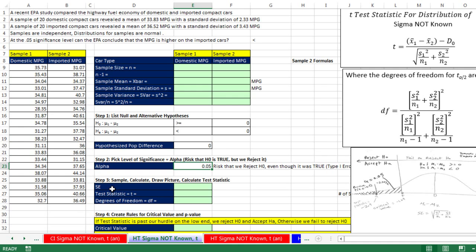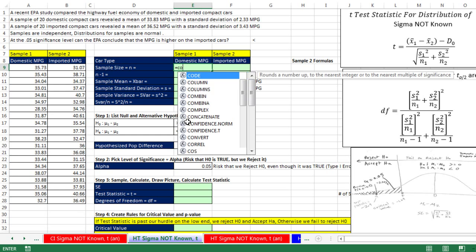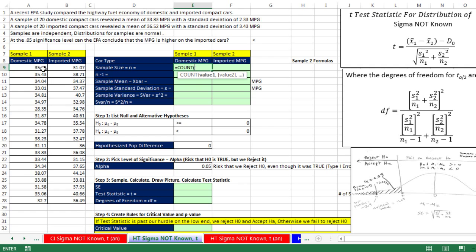Step 3, let's sample, calculate, draw our picture, and calculate our test statistic. We better get busy calculating sample 1 and sample 2. So our sample size equals count, because we're counting numbers. Highlight all these, Control-Enter, and copy it over. F2 to put in edit mode, and sure enough, the relative cell reference is moved. So we have a sample size of 20 for each one.